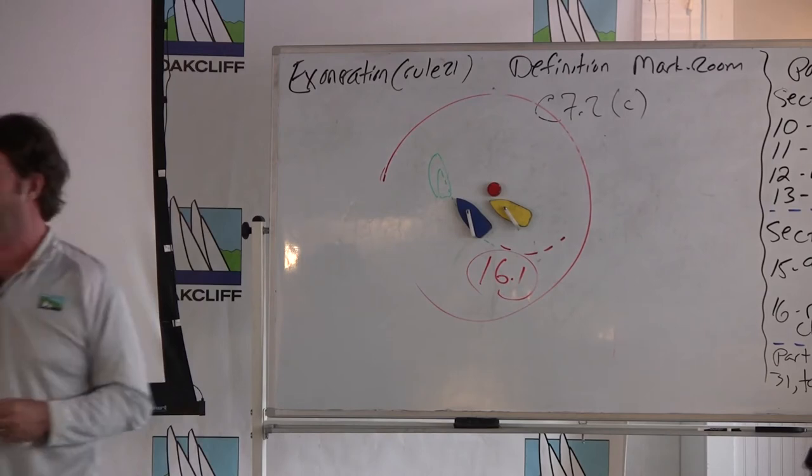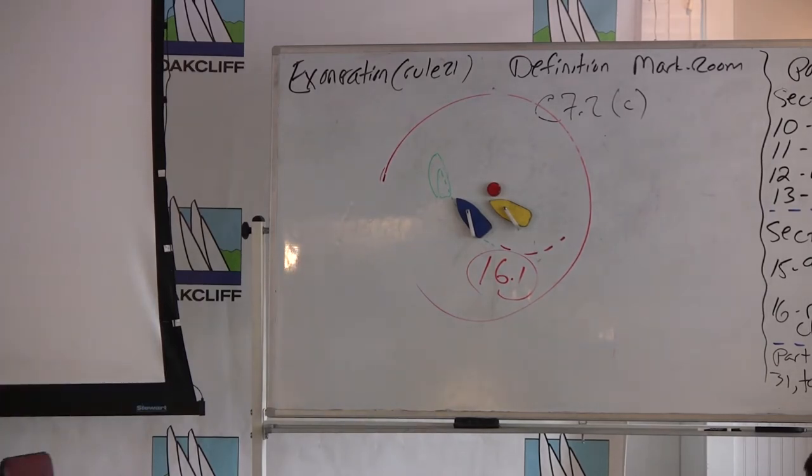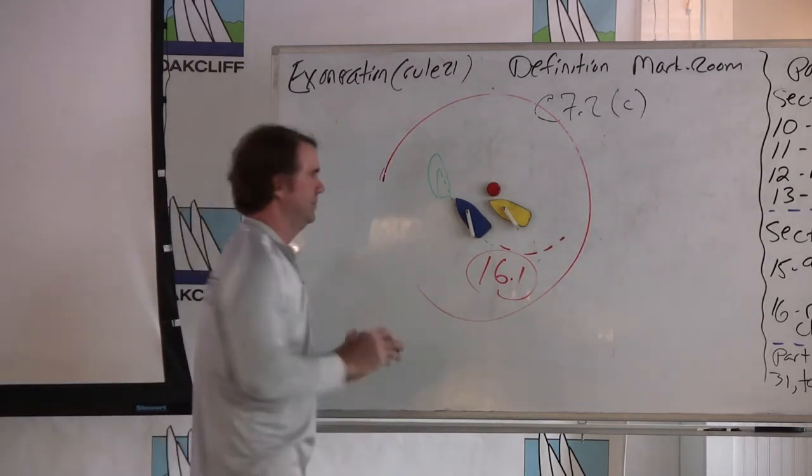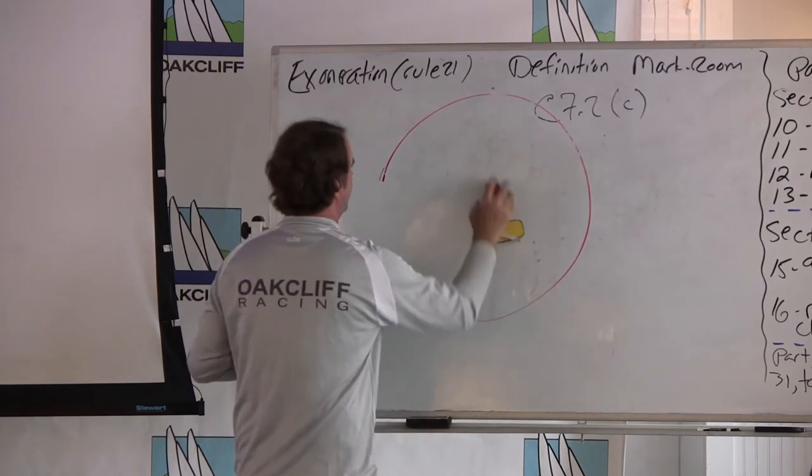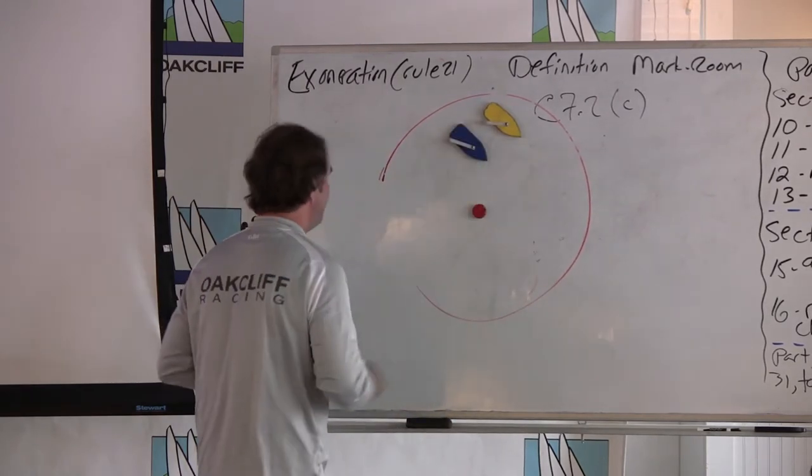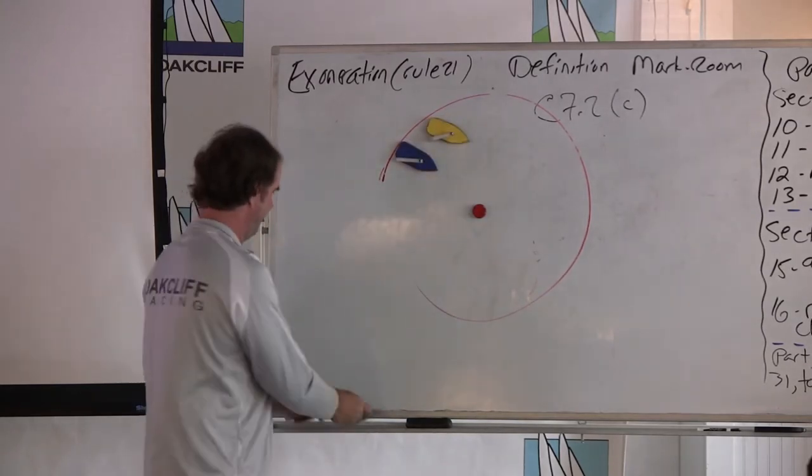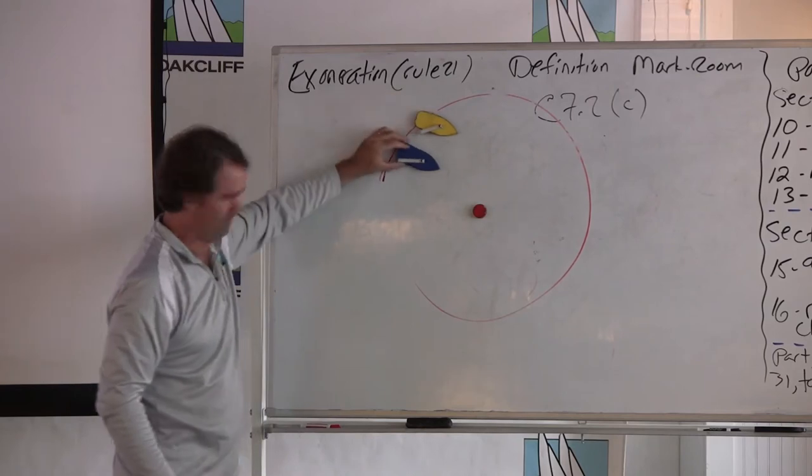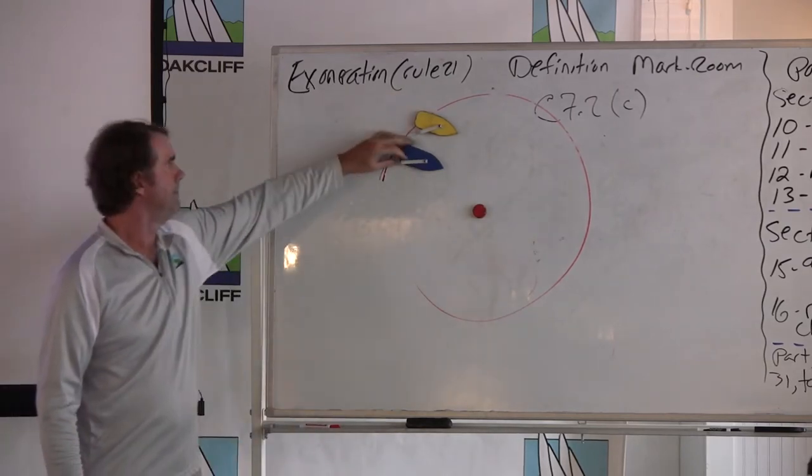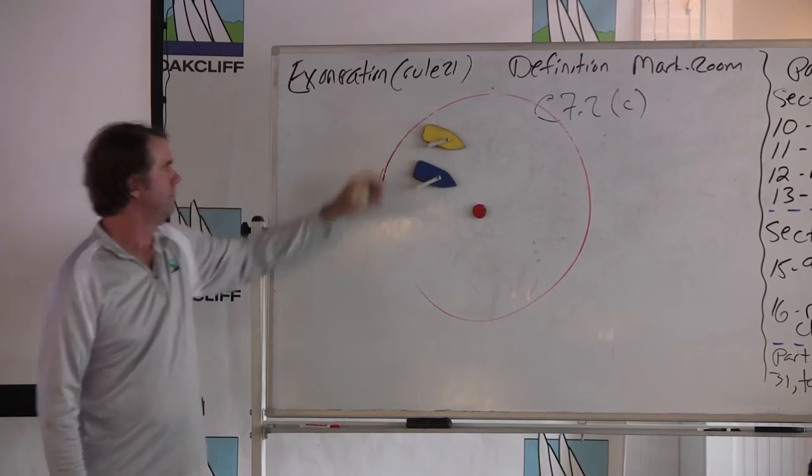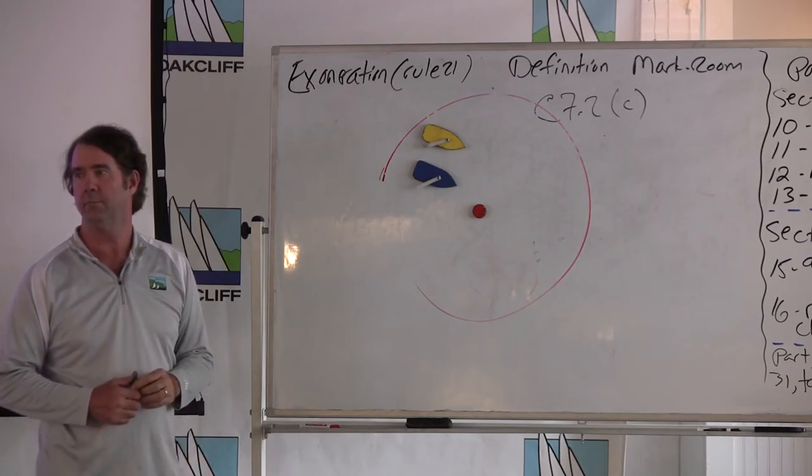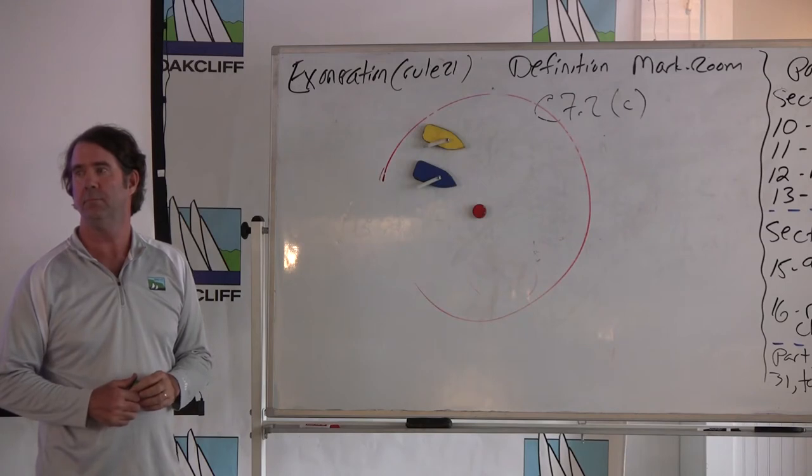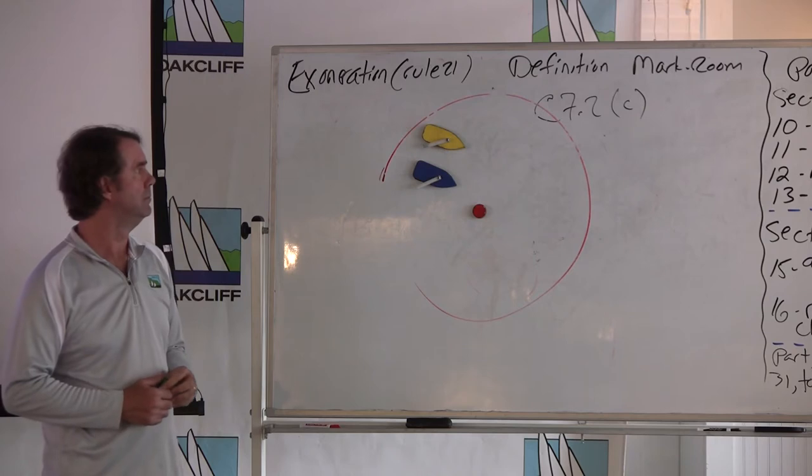Other questions on exoneration mark room? Same thing at the bottom mark, but you're coming in, both boats coming in from the left. We'll say yellow on the inside, blue on the inside, yellow on the outside. And as they get closer to the mark, there's enough room for the hull, but not for the boom. And the boom hits the mark.